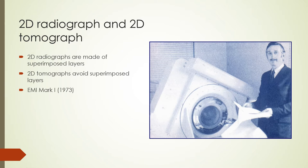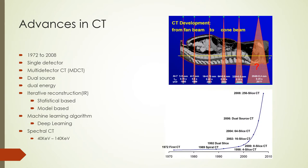There was a lot of anatomic noise as objects in higher layers obscured lower-lying objects. In 1972, Godfrey Hounsfield developed a technique to produce non-superimposed images of an object in a 2D slice. The EMI Mark 1 was one of the first CT scanners built — a single-detector, single-slice scanner with a bore big enough to scan a head.